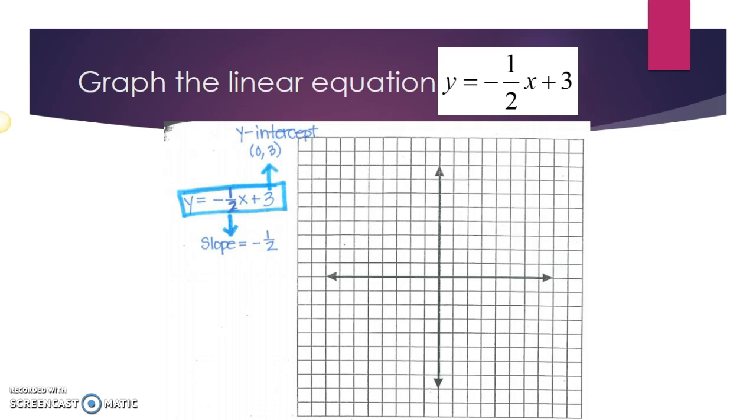The slope in this equation is negative one-half, and the y-intercept is the ordered pair zero comma three. It's important that you're able to write your intercepts as ordered pairs so you place them on the correct axis when you go to graph.